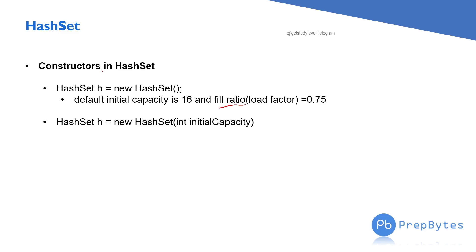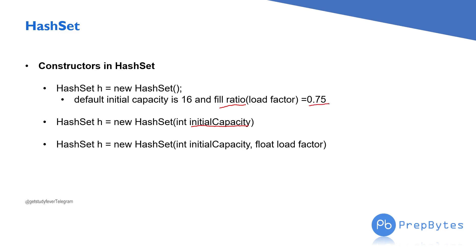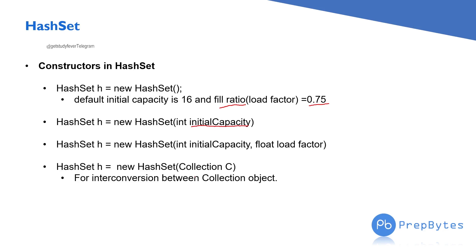The second constructor is `new HashSet(initialCapacity)`, where we define the initial capacity — the load factor remains the default 0.75. The third constructor is `new HashSet(initialCapacity, loadFactor)`, where we define both. For example, if the load factor is 0.50, a new hash table is created when 50% is filled. The fourth constructor takes a Collection object for interconversion — if you pass an ArrayList or LinkedList, it is converted into a HashSet.